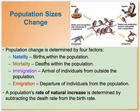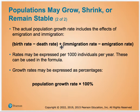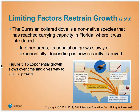Populations change over time. Natality is the birth of individuals in a population; mortality is the death of individuals. Immigration is individuals moving in and emigration is individuals moving out. Populations change constantly based on these four factors. There's a math equation where you take birth rate minus death rate, then add immigration rate minus emigration rate, to see if the population is growing or shrinking.